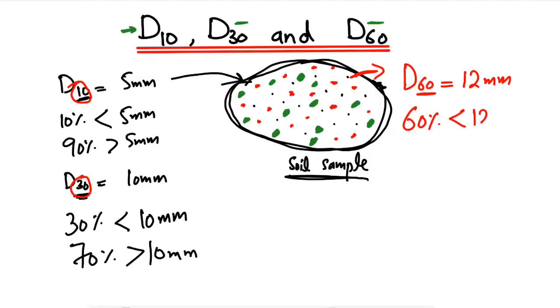60 percent of the particle sizes in this sample are lower than 12 millimeters, while 40% - the remaining 40 percent because you always look at 100 percent of the soil sample - are greater than 12 millimeters.